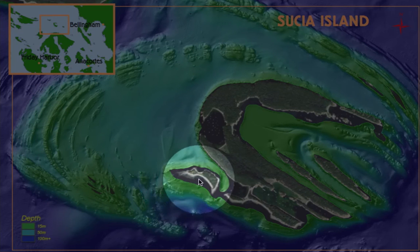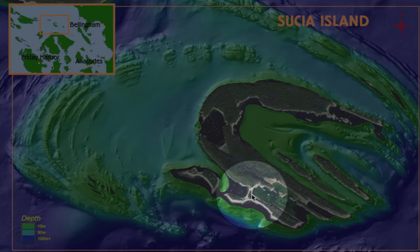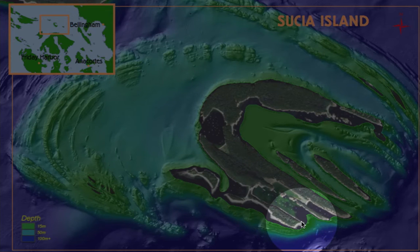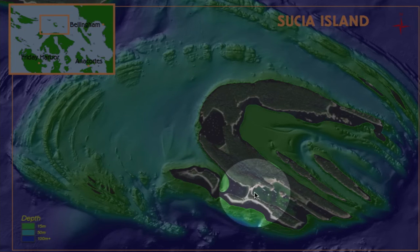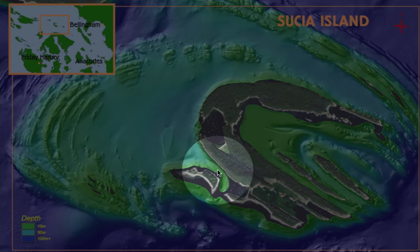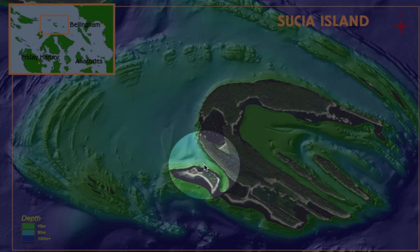There is a fault that runs right through Fossil Bay. You can see it right here — it's a very, very straight feature. It continues out off through here some way, and this separates two different ages of rocks.